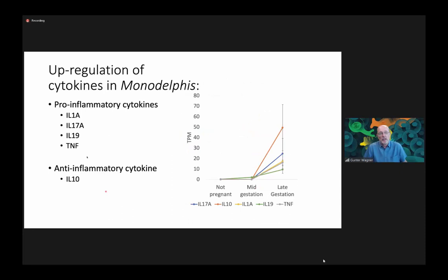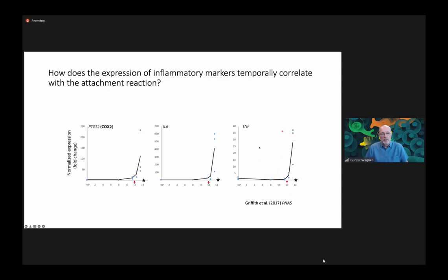Examples of upregulated genes include interleukin-1, IL-17A, IL-19, tumor necrosis factor, but also anti-inflammatory cytokines like IL-10. We see an increase from mid-gestation, where many of them are barely expressed, to quite high expression. More detailed day-by-day monitoring makes it clear that this increase in inflammatory mediators coincides with the loss of the separation between the fetus and the mother, with a progressive increase in expression of IL-6, ZNF, and others.